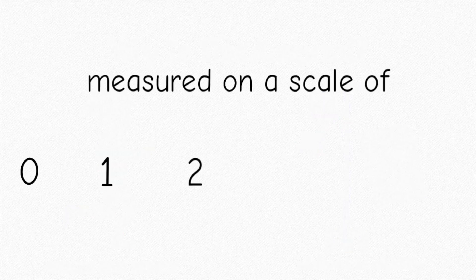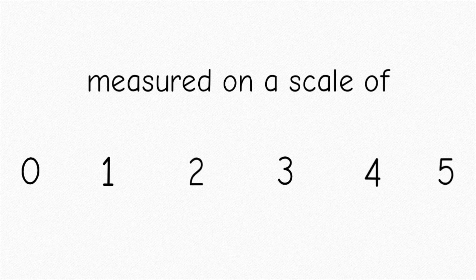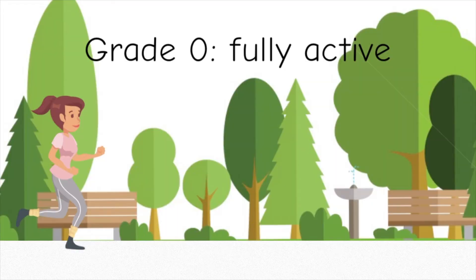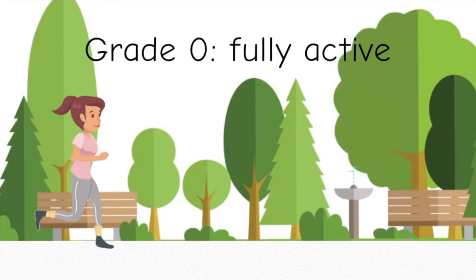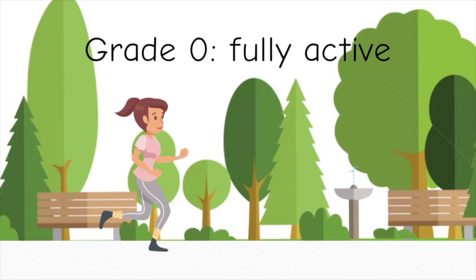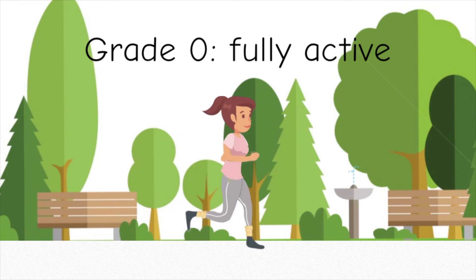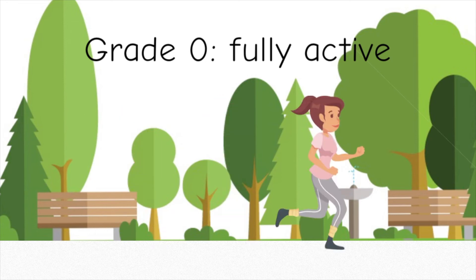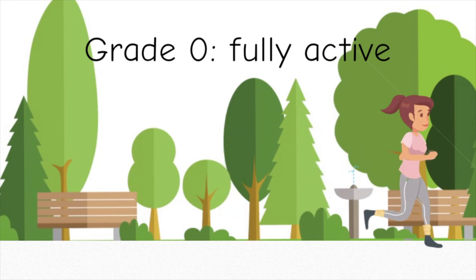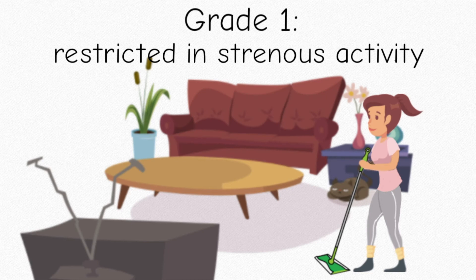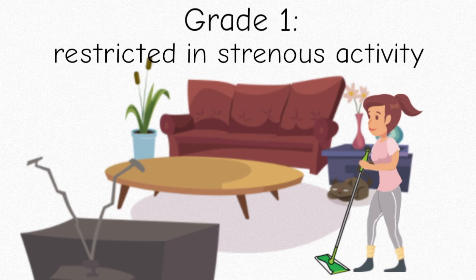ECOG is measured on a scale from 0 to 5. Grade 0 means you're fully active and you're able to carry on all of your pre-disease activities without restriction. Grade 1 means you're restricted in physically strenuous activity, but you can still walk around and carry out work of